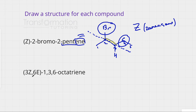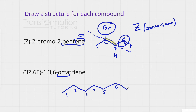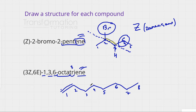Let's go to the next molecule: 3Z,6E-1,3,6-octatriene. Octa means I have eight carbons, so I draw eight carbons: one through eight. 'Tri' means three double bonds, and '-ene' means double bond. My three double bonds start at carbons one, three, and six.